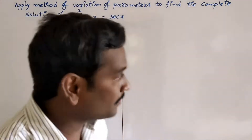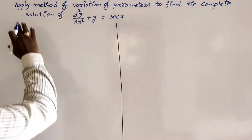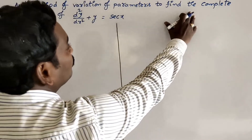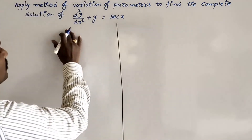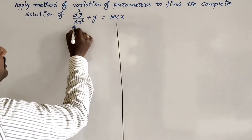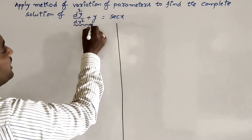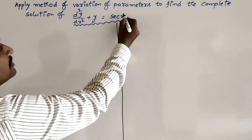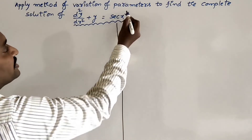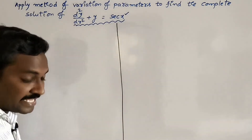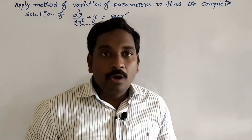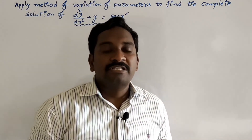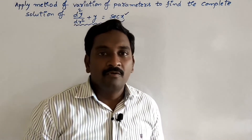See the statement. Apply the method of variation of parameters to find the complete solution of d²y/dx² + y = sec(x). Here, the right-hand side function is sec(x). So how can we find out this type of problem using this method?